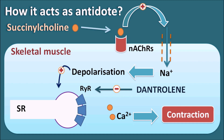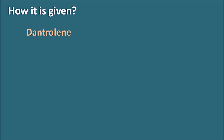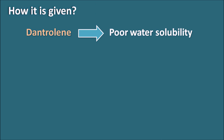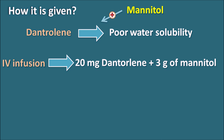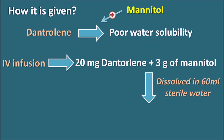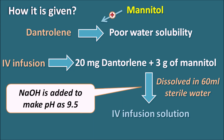The purpose of dantrolene is to antagonize the action of succinylcholine on malignant hyperthermia, but it is not used to prevent the action of succinylcholine altogether. Regarding administration: dantrolene is a hydantoin derivative and a lipophilic drug with poor water solubility, so it is combined with mannitol to increase its water solubility. As an antidote, it is given as an IV infusion — 20 mg of dantrolene with 3 grams of mannitol dissolved in 60 ml of sterile water for injection. The pH should be maintained at 9.5 by adding sufficient NaOH to prevent tissue irritation at the infusion site.